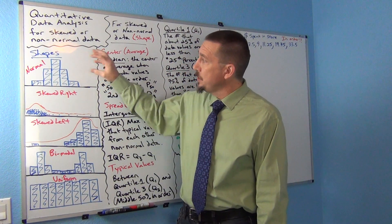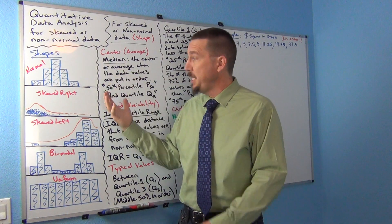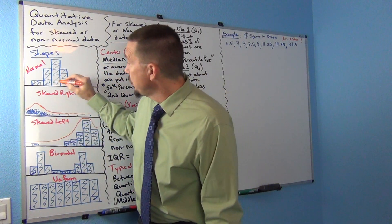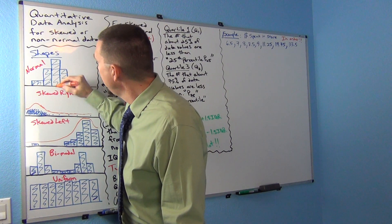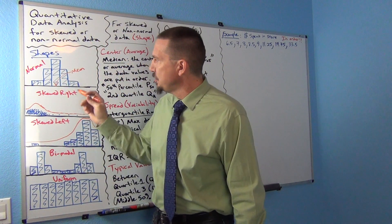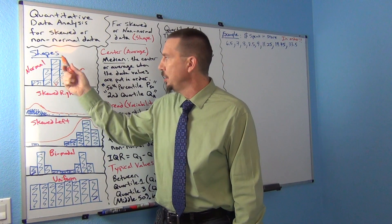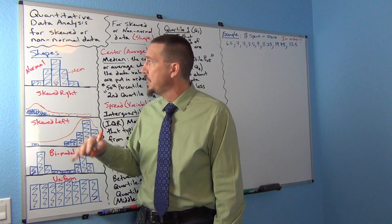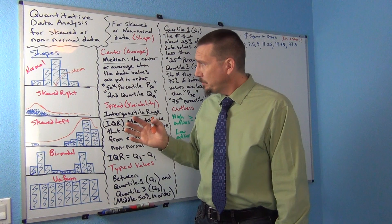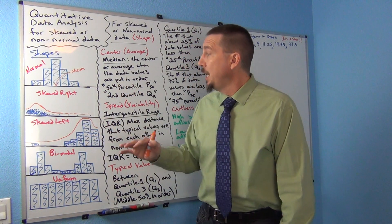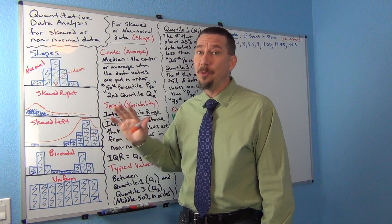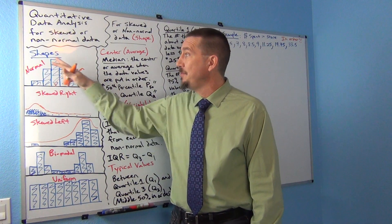For normal data, we like to use the mean as our average and the standard deviation as our spread. The mean falls pretty close to the center, which is what we want — an average close to the highest bar. But mean averages don't work well for non-normal data; they tend to be not very accurate. The rule of thumb in stats is: only use the mean and standard deviation when you have normal data.